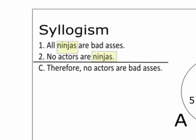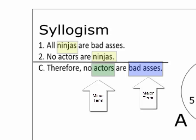One of the terms appears in both premises. It's called the middle term. In this case, it's ninjas. Meanwhile, each of the other terms appears in one of the premises and as one of the terms in the conclusion. We're going to call the subject of the conclusion the minor term, and the predicate of the conclusion we call the major term.